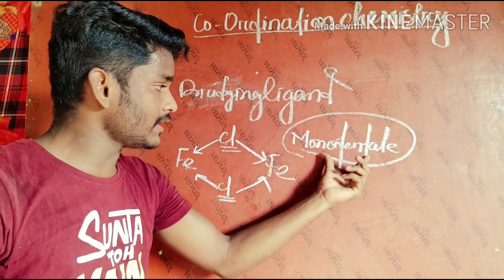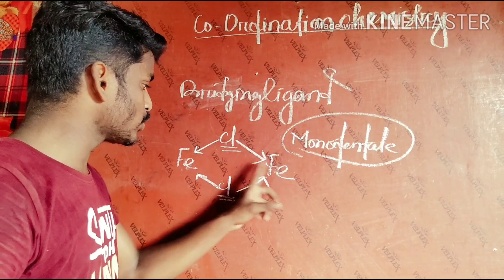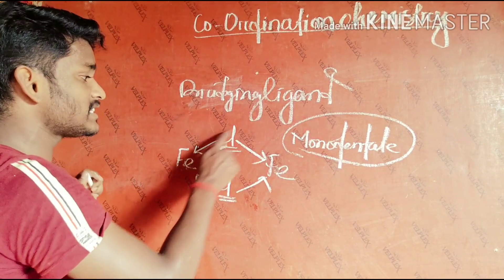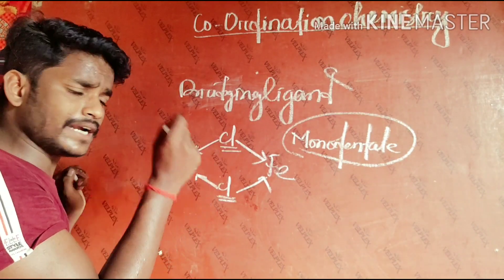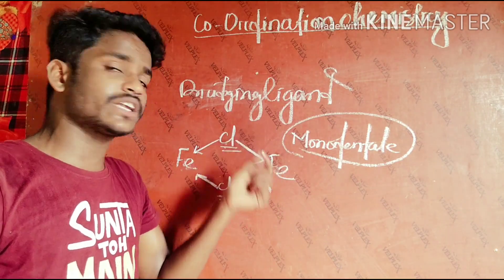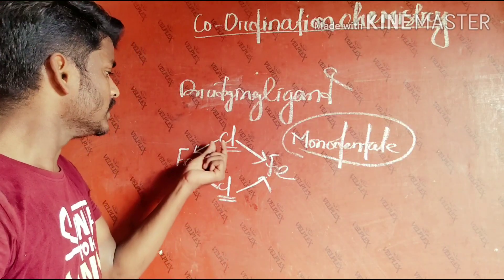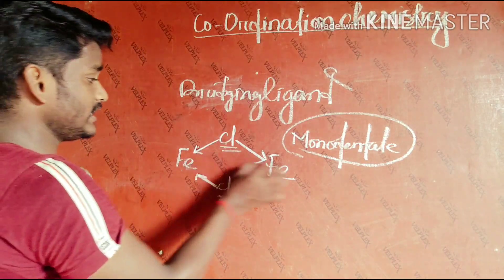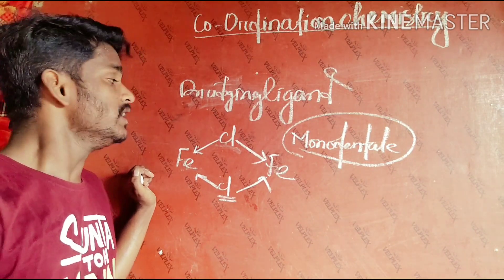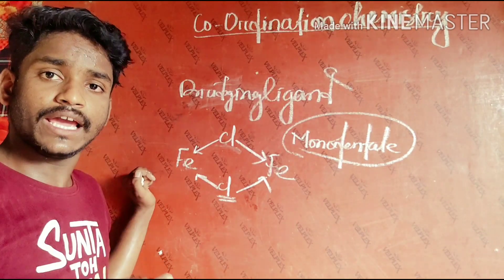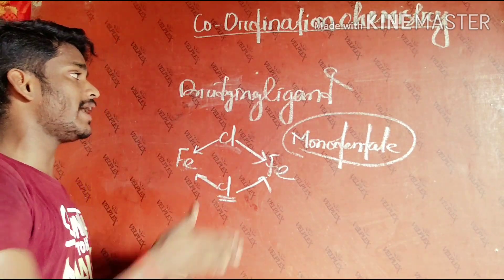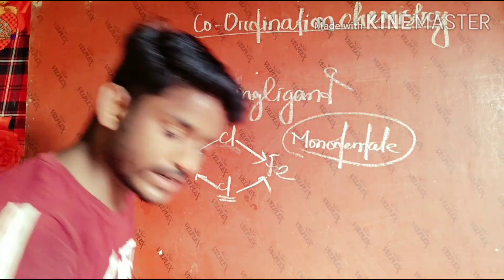A bridging ligand is a monodentate ligand that forms a bridge between two central metal atoms, connecting them.